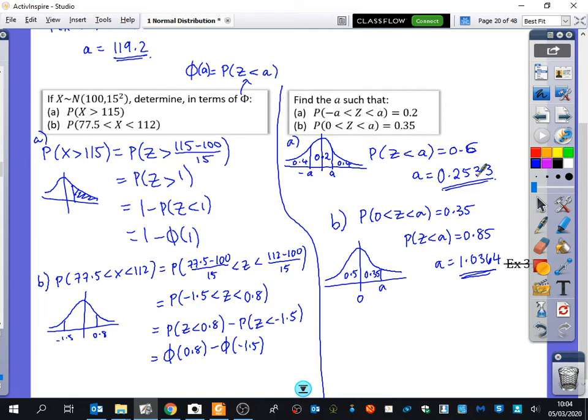And then for this last one here, because it's between 0 and A, well, I know this left-hand branch over here is 0.5 because it's exactly half of it. The branch that they've told us is 0.35. So I changed it to a statement that was 0.85, and I used the calculator, but you could have used the table for that as well.